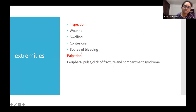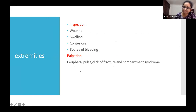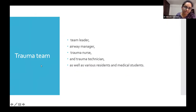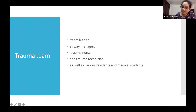Extremity inspection: look for wounds, swelling, contusions, and sources of bleeding; palpate for loss of peripheral pulse, fractures, and compartment syndrome. Diagnostic tests include X-rays, CT scan of head, chest, abdomen, and spine, ultrasonography, and sometimes bronchoscopy or transesophageal ultrasound. The trauma team consists of a team leader, airway manager, trauma nurse, trauma technician, and various medical and surgical residents.